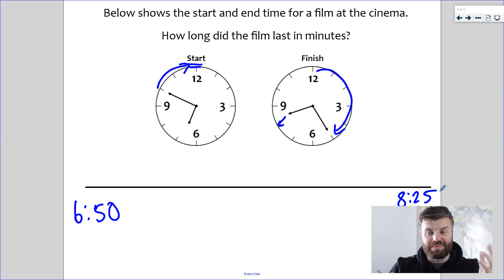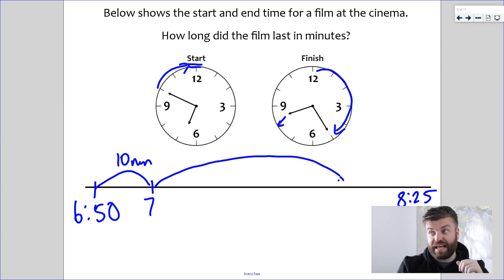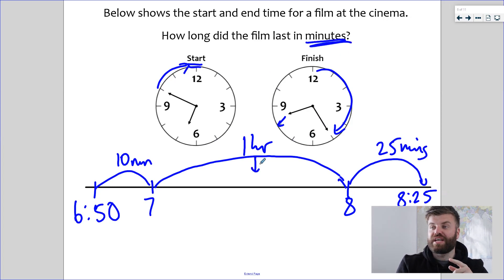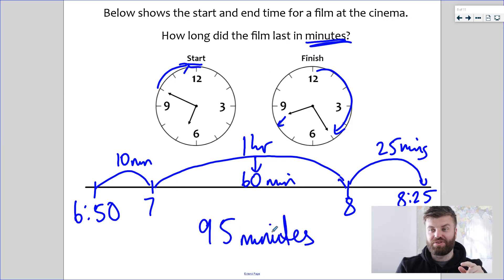So now I've got 6:50 and I've got 8:25. I can do my jumps. Very quickly, we jump to the next hour, which would be seven. That's a 10 minute jump. Then we jump to the closest hour, which again, luckily for us, is just a one hour jump to eight. So that's one hour. And then the final jump to 8:25, really simple, is 25 minutes. Just check the question. Yes, it asks for it in minutes again. So I'm going to change this straight away to 60 minutes. 60 plus 25 is 85 plus 10 is 95 minutes. That is the duration of the film. Getting it right every time with the timeline.